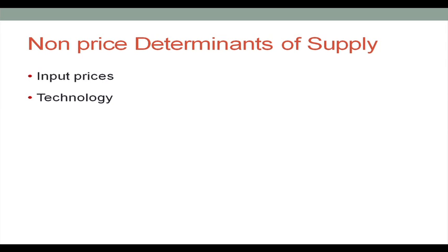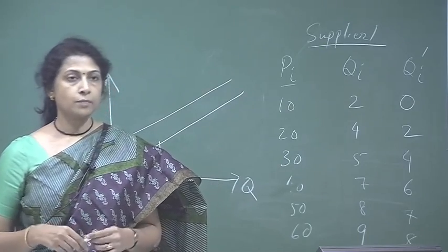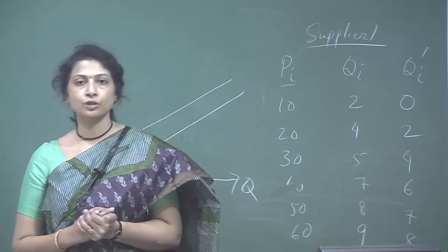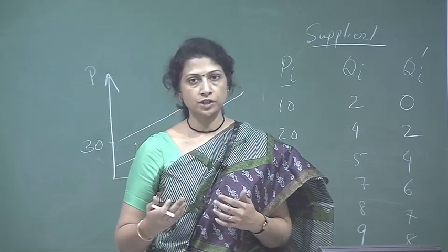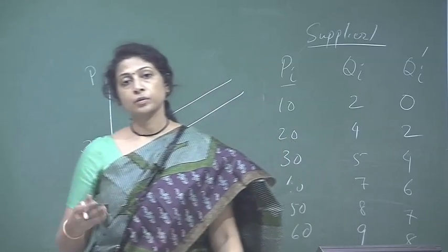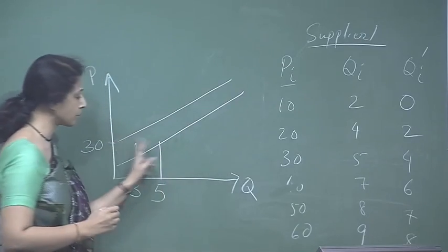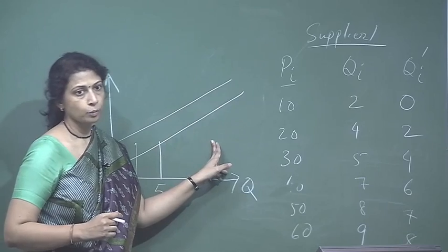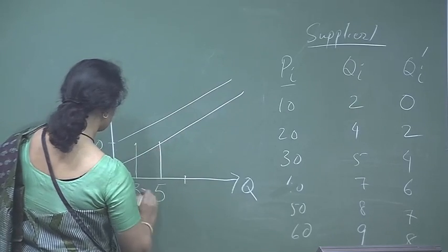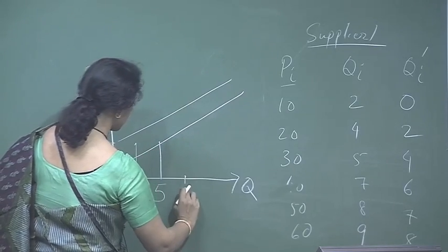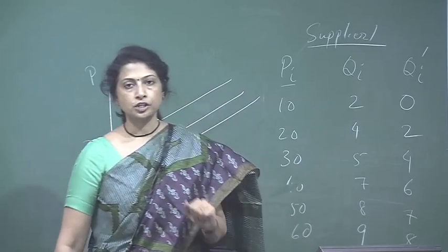Another determinant is technology. Imagine the ice cream producer acquires a machine that produces ice cream more quickly and efficiently, using less electricity and producing more in less time. His costs fall, so at the same price — say 30 rupees — he is now willing to supply 7 units instead of 5. For every price his supply has increased, meaning the supply curve shifts to the right.